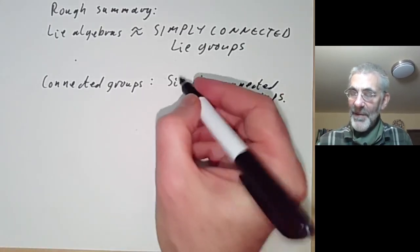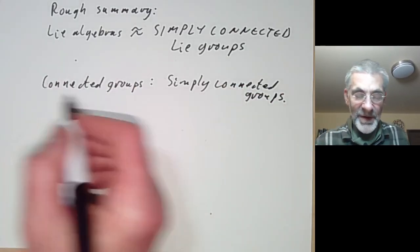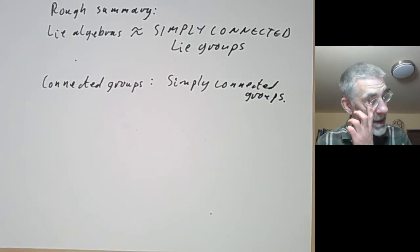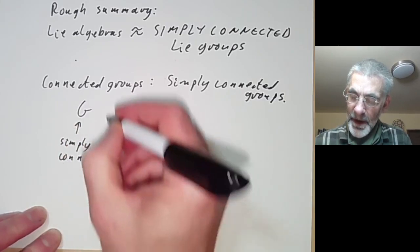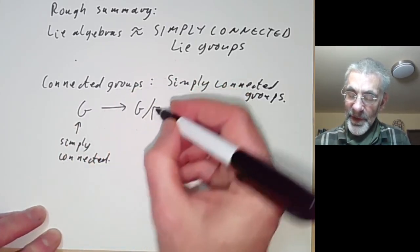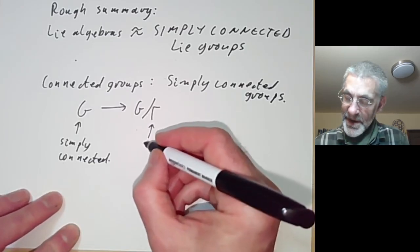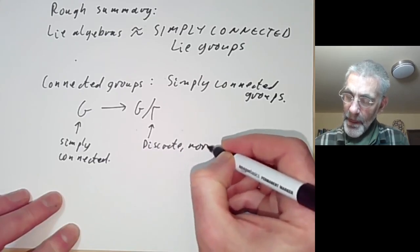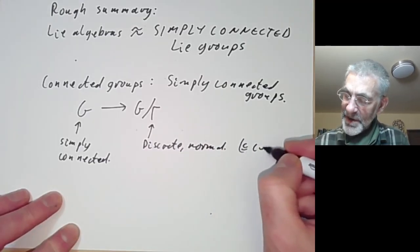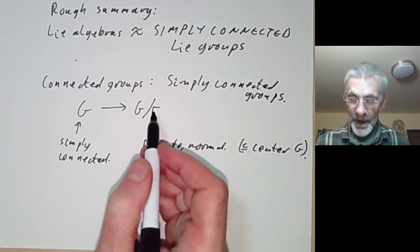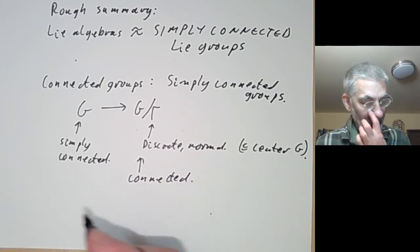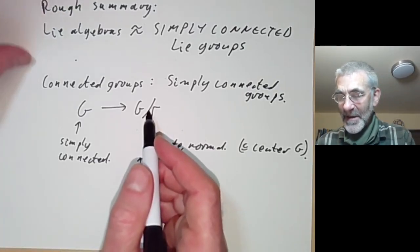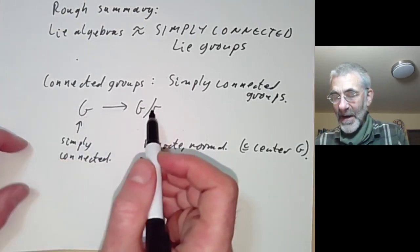Suppose we've somehow managed to understand all the simply connected groups. How can we find all the connected groups from that? If we've got a simply connected group we can form another group by taking the quotient G/γ where γ is discrete and normal, and as we saw earlier this implies it's actually in the centre of G — and this is a connected Lie group. Conversely, if we've got any connected Lie group we can construct a simply connected Lie group such that our connected group is a quotient of it.